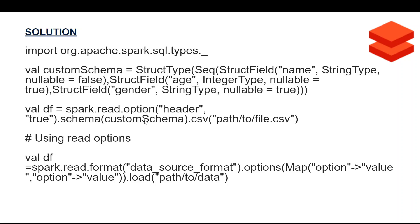If you want to infer the schema from the file you're reading rather than specifying it manually, you use the inferSchema option set to true. So instead of defining a custom schema with StructType, you say option('inferSchema', True) and Spark will automatically determine the data types. The second part of the question asks about the different options you can specify when reading a file — you can define multiple options such as header.